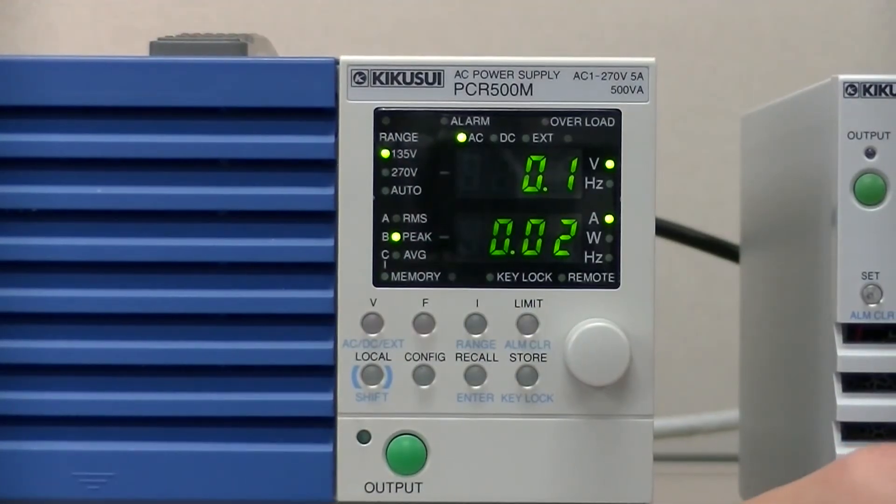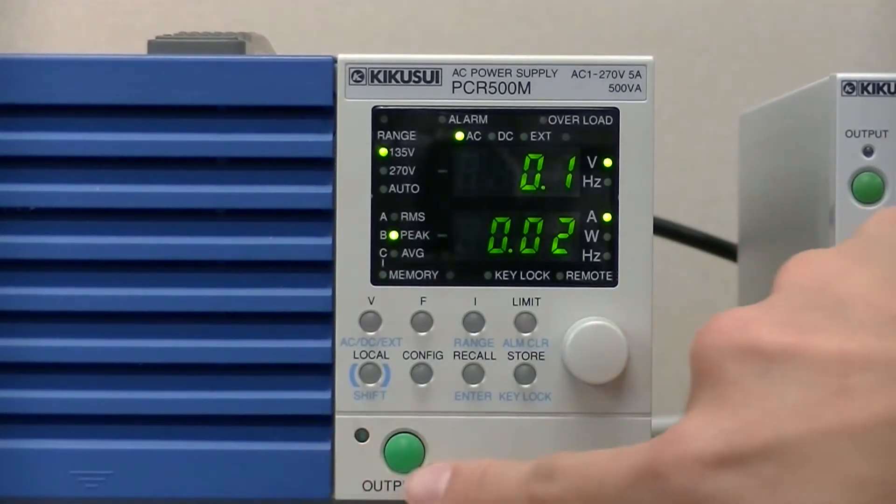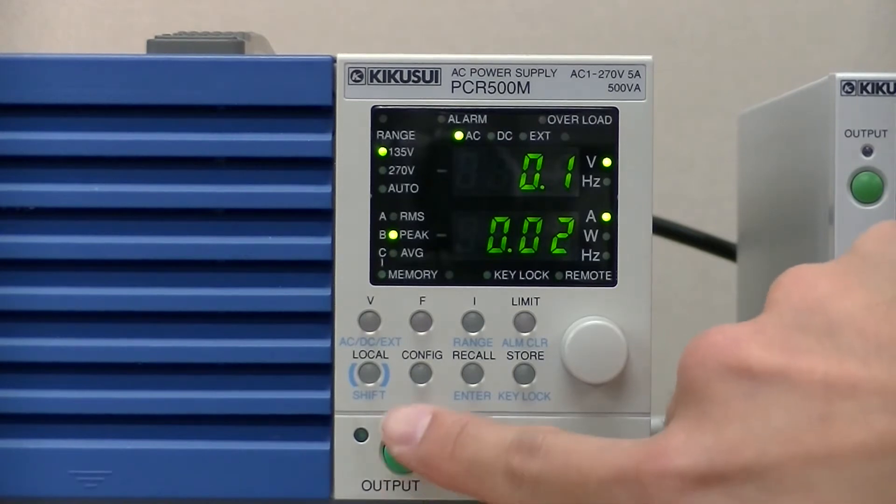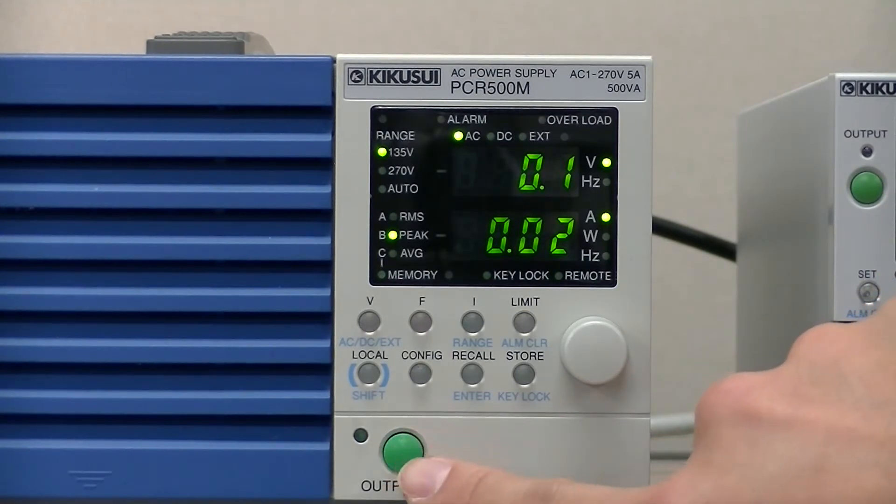When you finish setting parameters and want to power on the output, press this green button right here to turn on output. Remember when you finish, please press the output button again to turn it off.